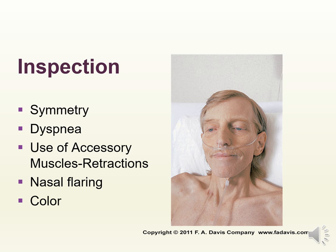Inspect carefully, looking for symmetry — the ability of the chest to properly rise and fall together, which can be measured with excursion. Check if the chest is expanding and recoiling symmetrically. Look for dyspnea or shortness of breath, any use of accessory muscles such as nasal flaring, retractions around the sternocleidomastoid muscle and rib cage area, and observe the patient's color.